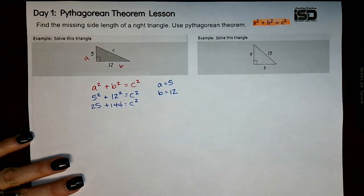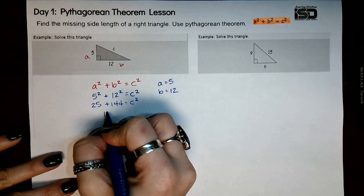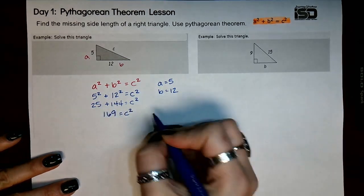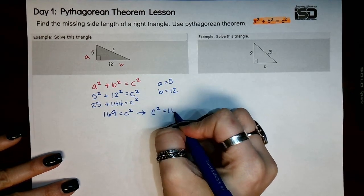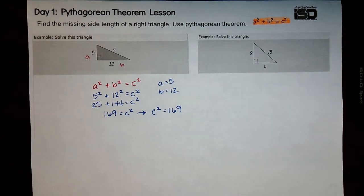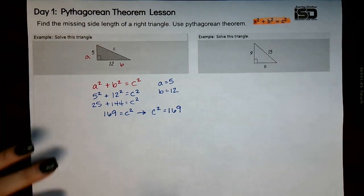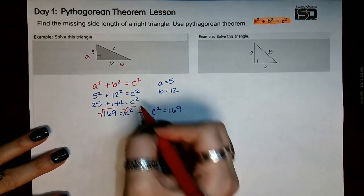Our next step is to actually add these together. These are the known values. 25 plus 144 is 169. Now, sometimes it helps to actually turn this around, but you definitely do not have to. Just know that it is equal either way. From here, you are going to find the square roots of both of these sides.